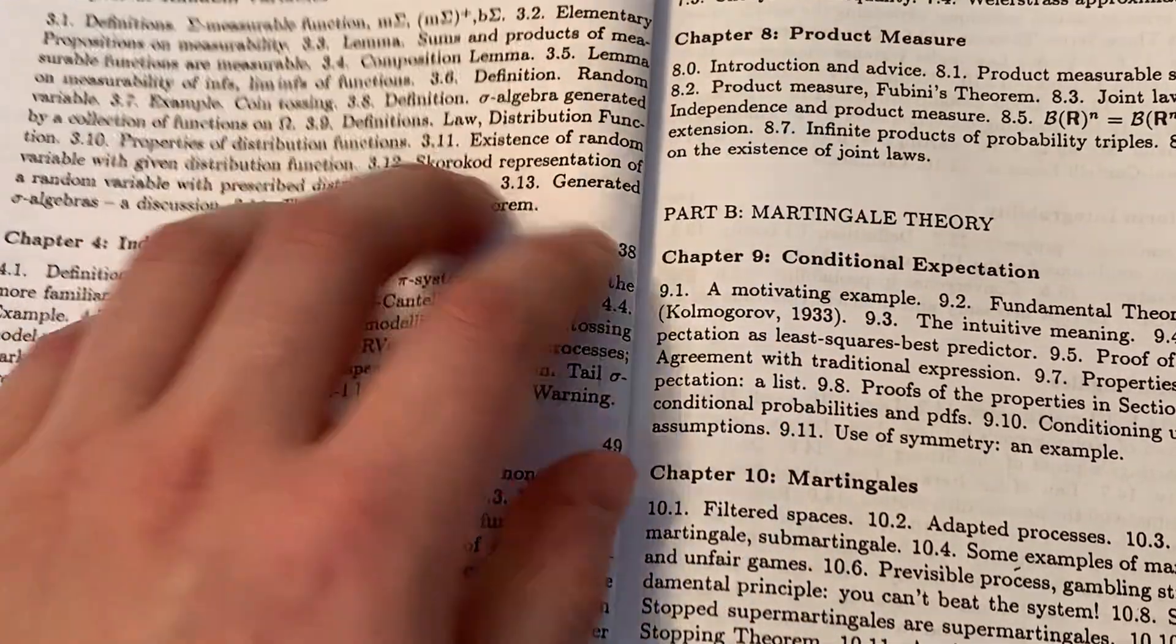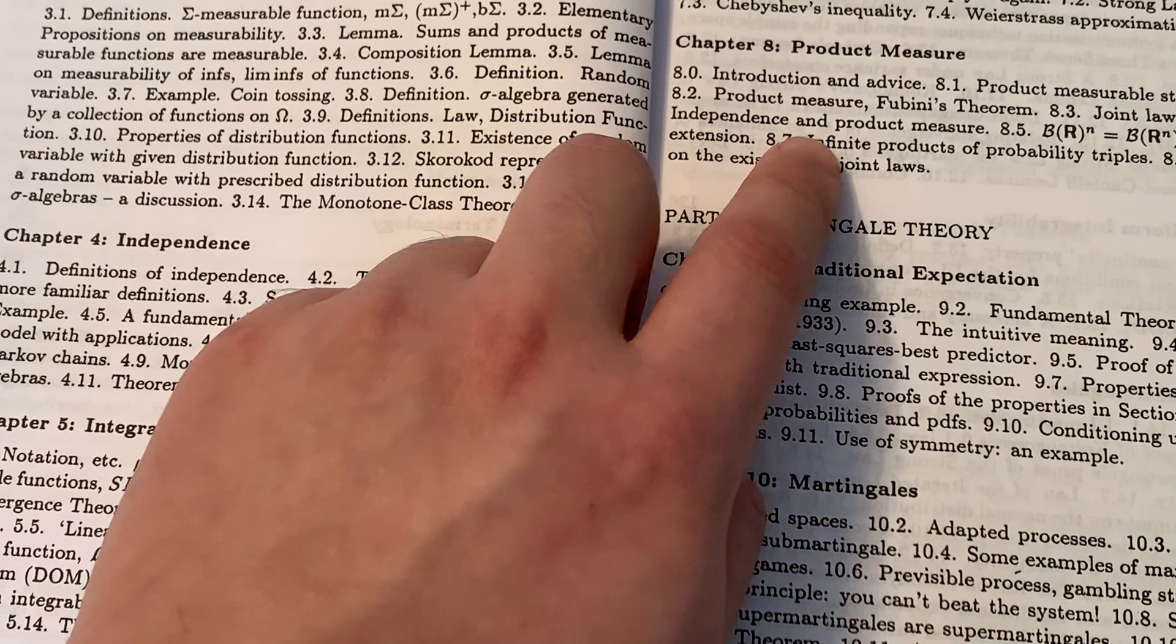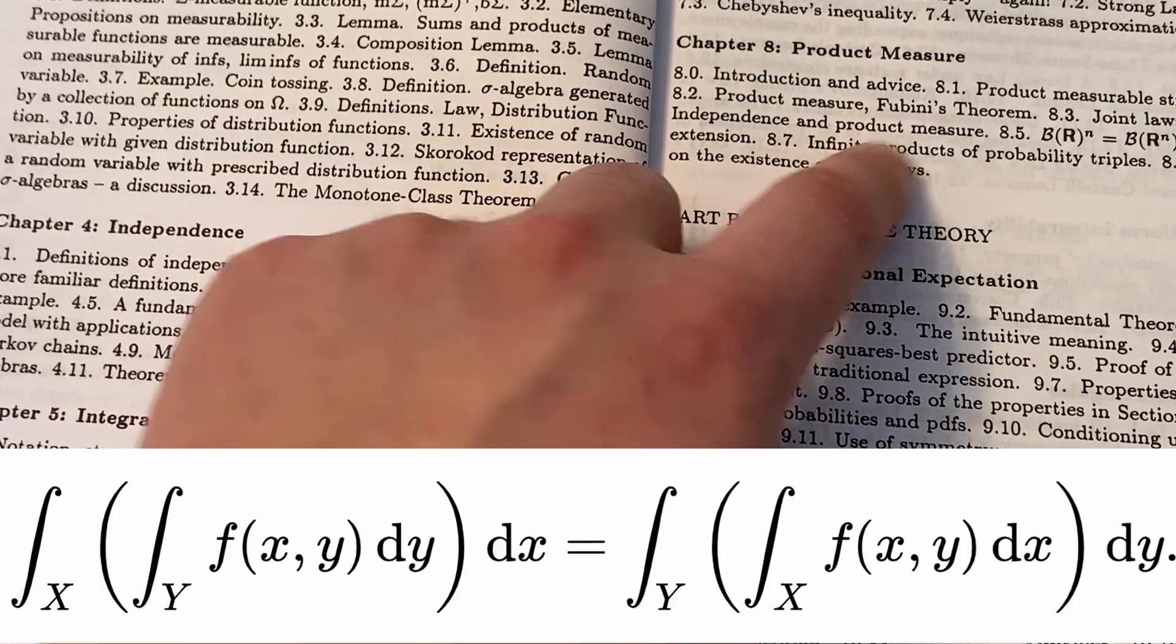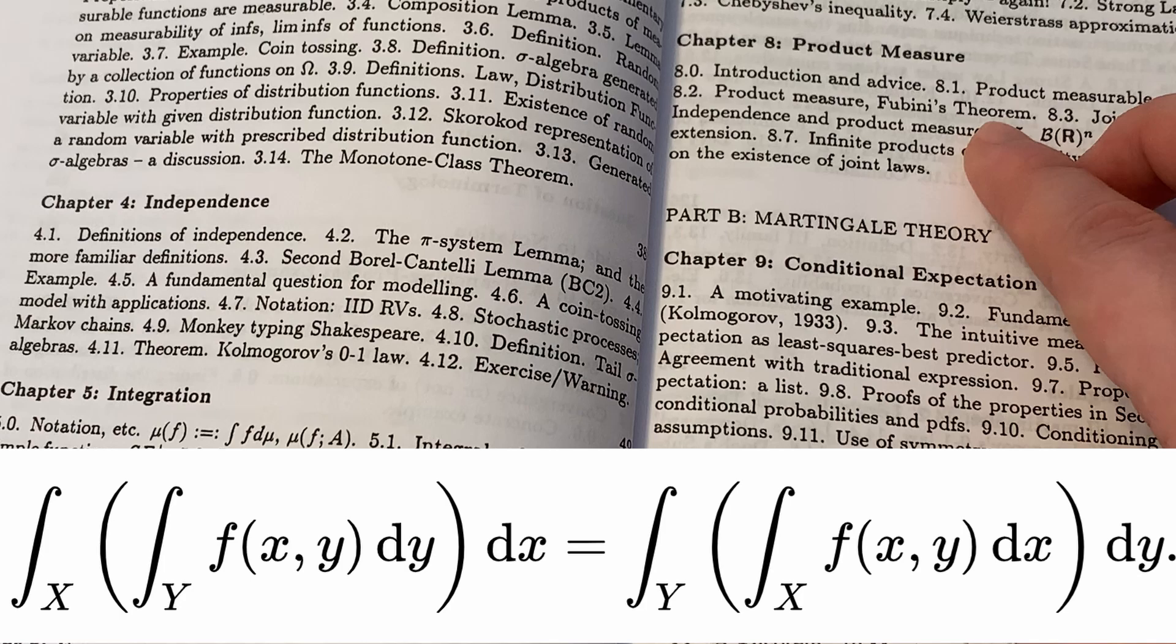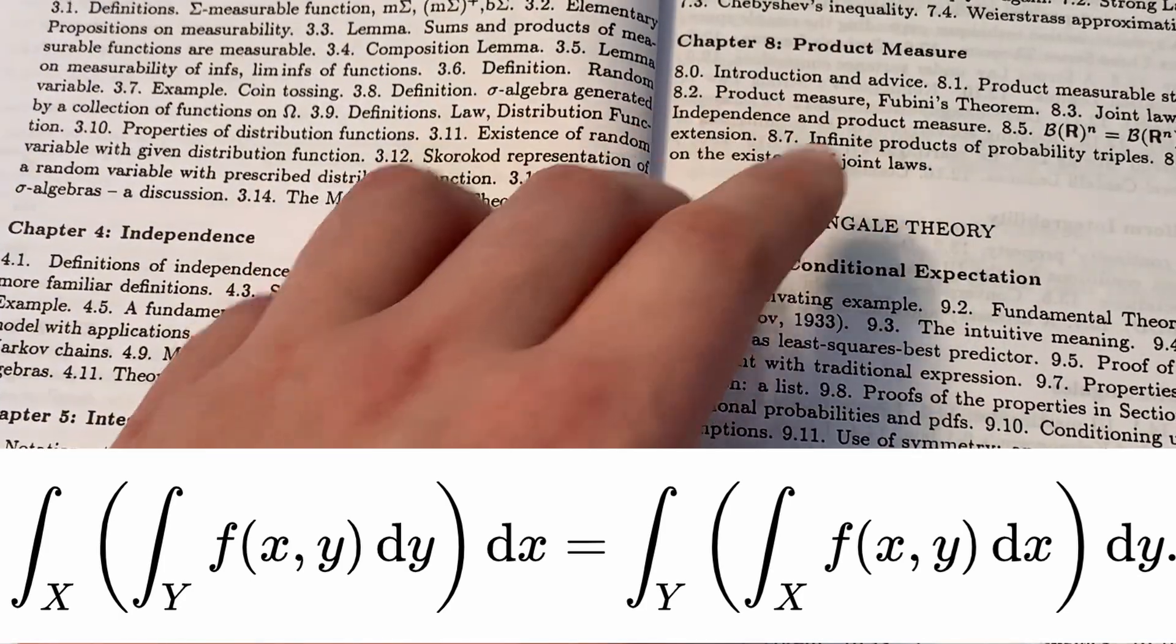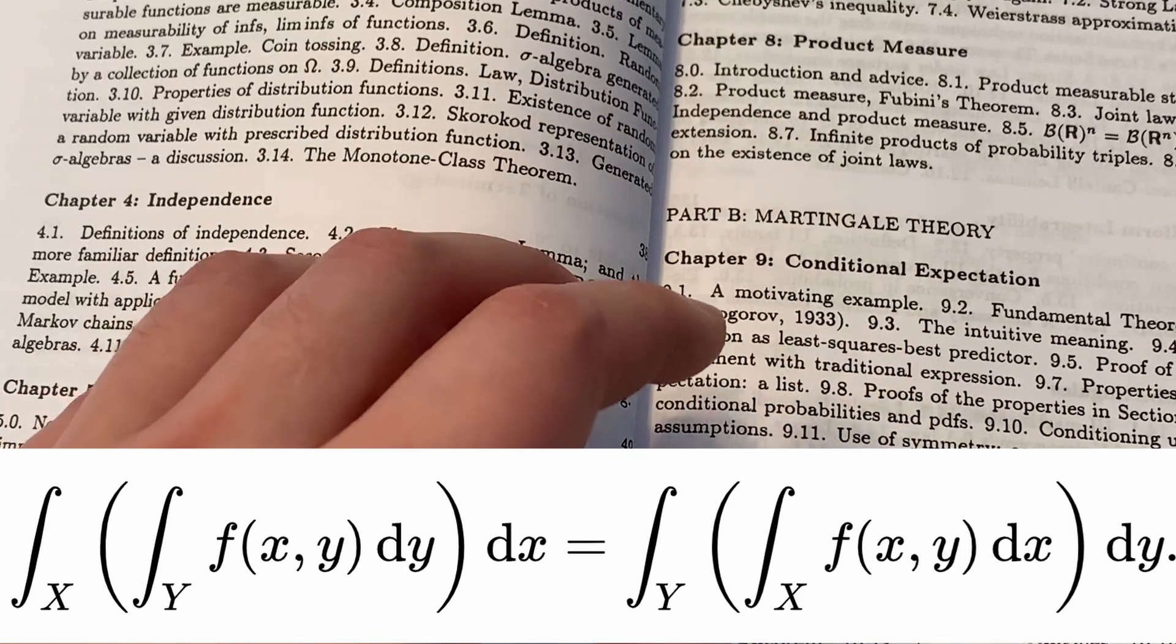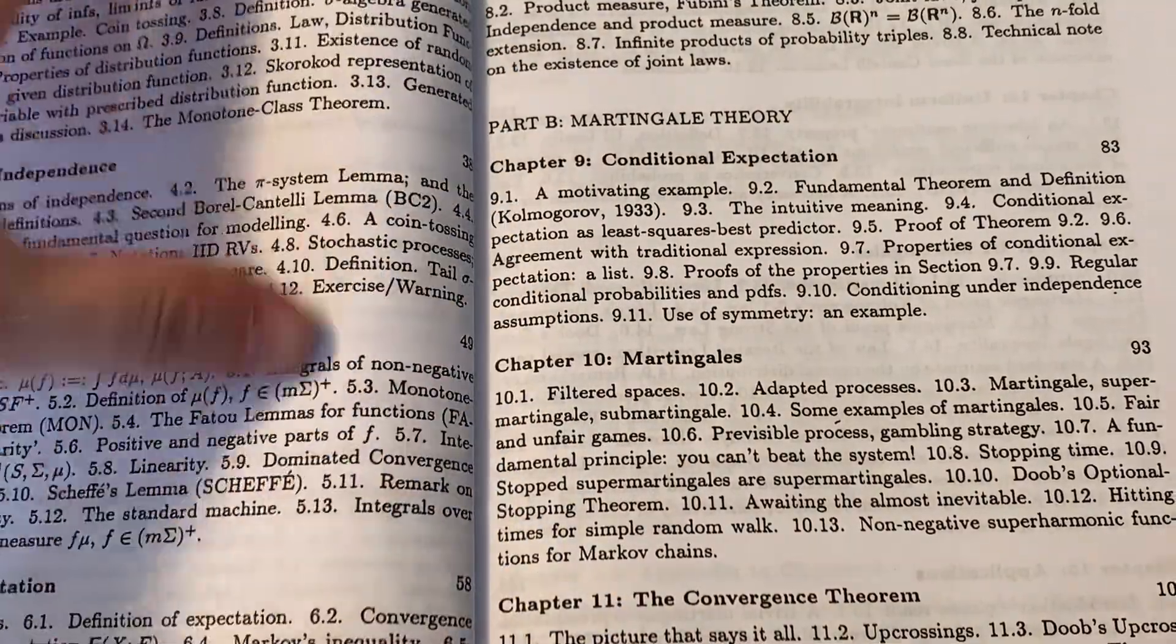Chapter 8 is about product measure. This is useful for defining joint distributions. And also a crucial result is the Fubini theorem. This allows us to interchange the order of integration. You've probably seen in the multivariable calculus course. With measure theory, interchanging the order of integrations can be applied to a much wider classes of functions.